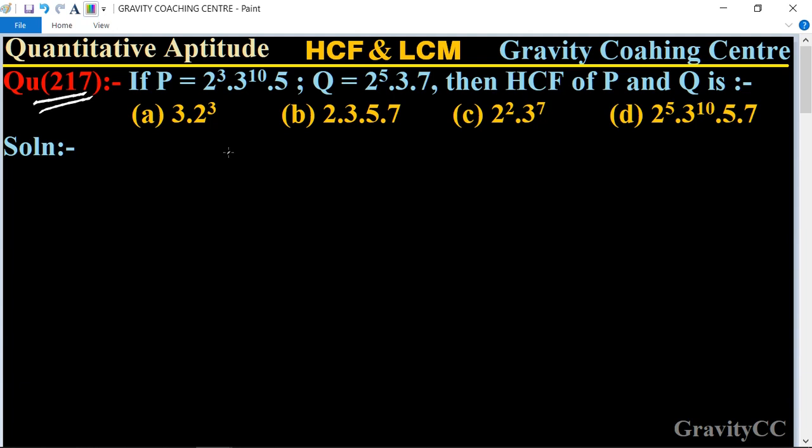So in this question, here P is given as 2 to the power 3 dot 3 to the power 10 dot 5, and Q is equal to 2 to the power 5 dot 3 into 7.